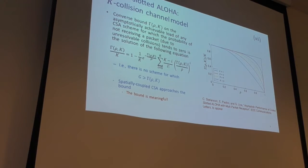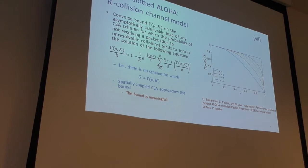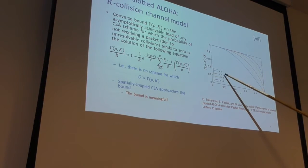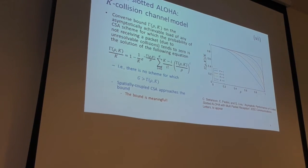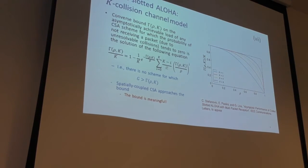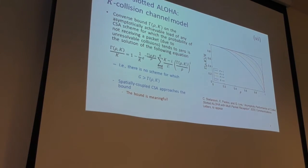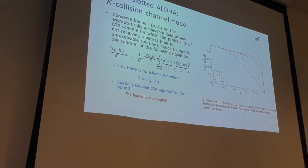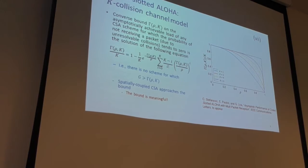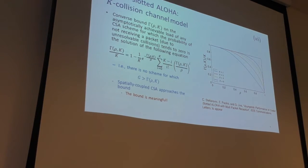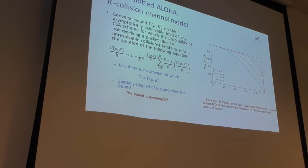There is also a strategy called spatially coupled IRSA described in the referenced paper that asymptotically achieves this bound, confirming that the bound is meaningful. So increasing K from 2 to 3 gives a real gain in normalized load, confirming that investing in K-MPR capability makes sense, at least in this idealized scenario.